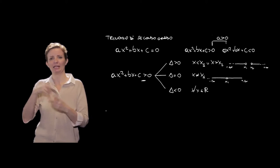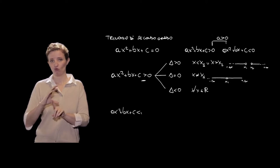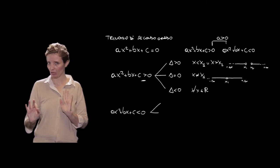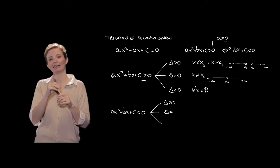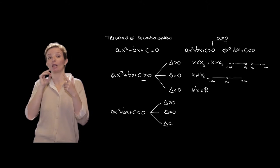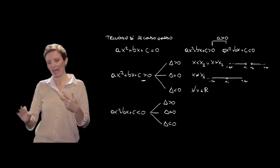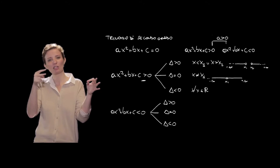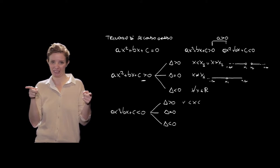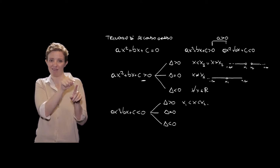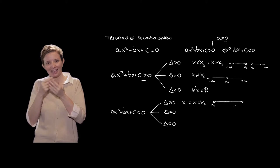Se invece vogliamo studiare AX² + BX + C < 0, vediamo anche qui i tre casi: delta > 0, delta = 0 e delta < 0. Nel caso delta > 0, il trinomio di secondo grado è negativo per valori compresi tra X1 e X2, quindi nell'intervallo aperto (X1, X2).